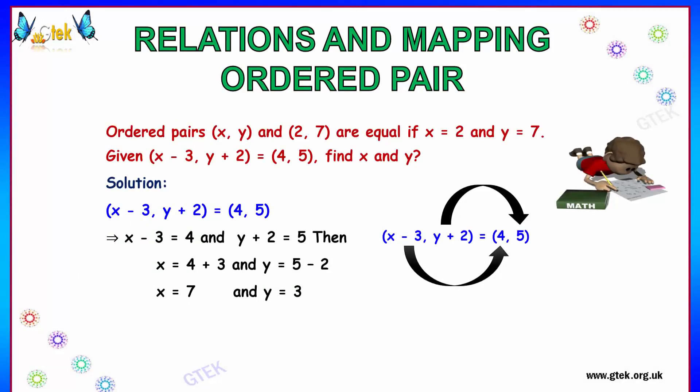Now we will move on to the next problem. Here we got (x, y) and (2, 7) are equal, and they provided the condition as x equal to 2 and y equal to 7.